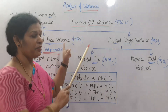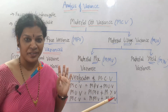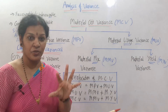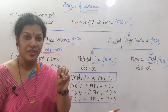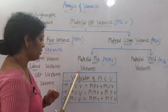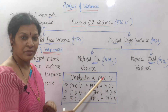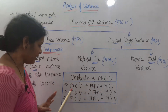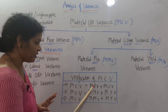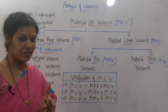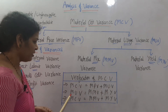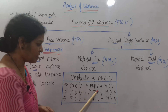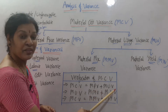Once we work out all five material-related variances, we can verify our answers. The verification of MCV works as follows: Material cost variance equals material price variance plus material usage variance — that is one way. The second way: material usage variance equals material mix variance plus material yield variance.